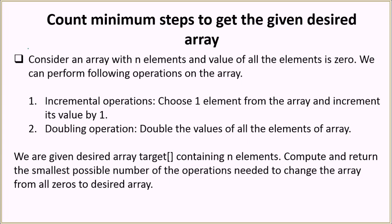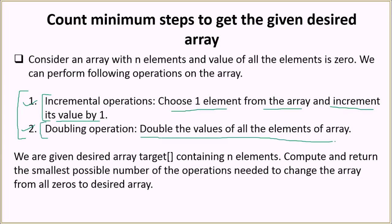To reach the desired array we can perform two operations only. The first one is the increment operation and the second one is the doubling operation. In the increment operation you choose one element from the array and increment its value by one. In the doubling operation you double the values of all elements in the array at once — you cannot double just one element at a time.